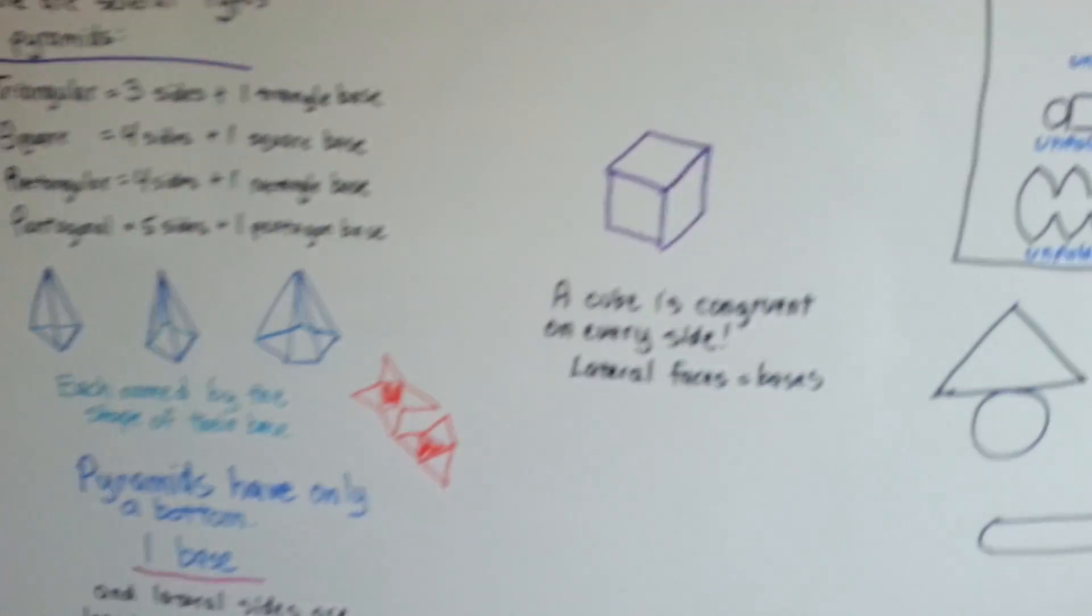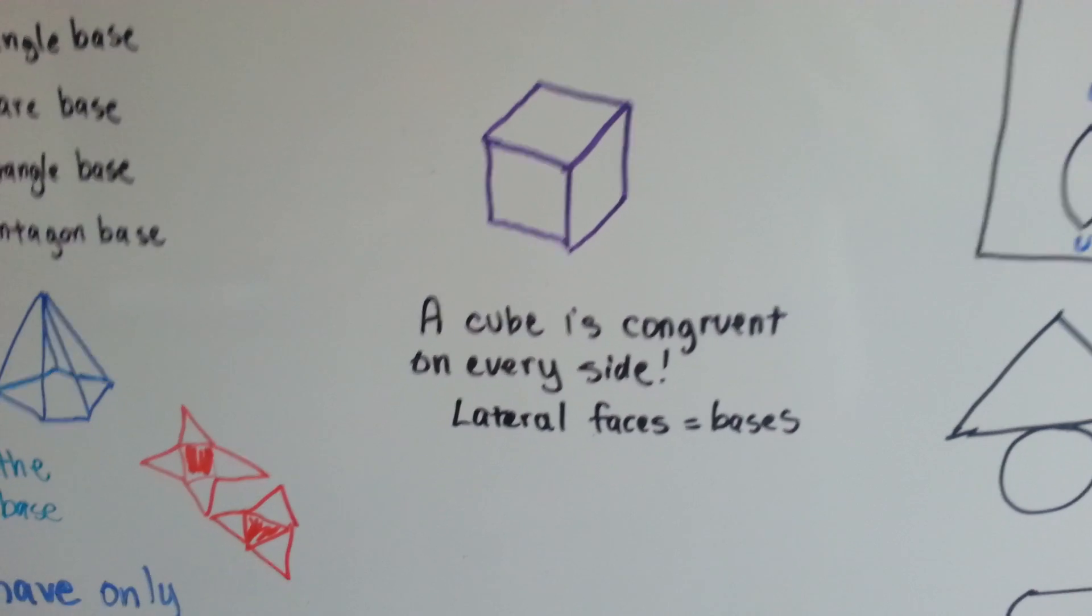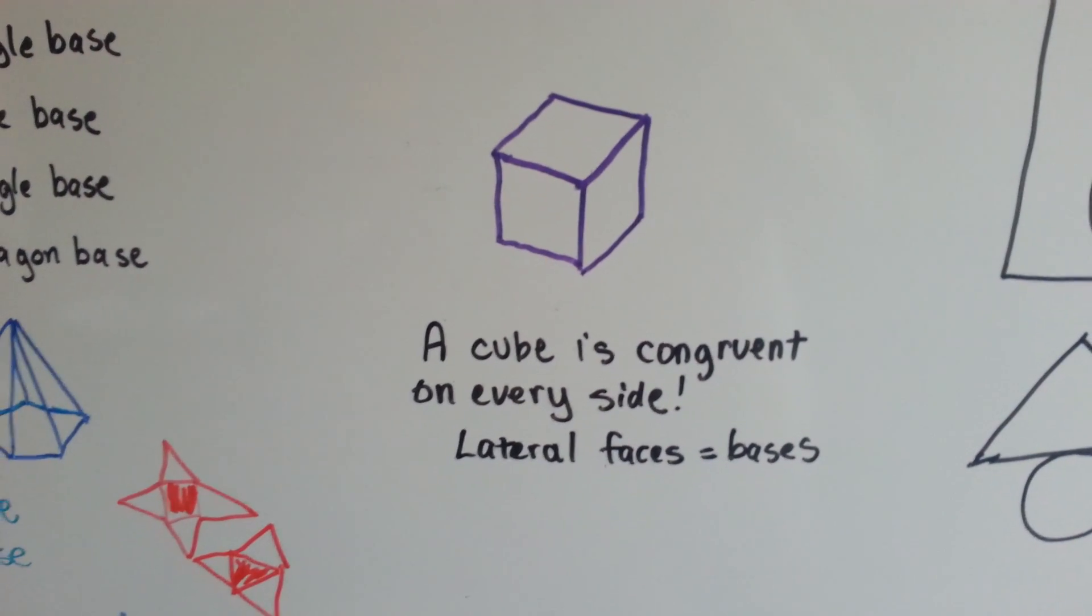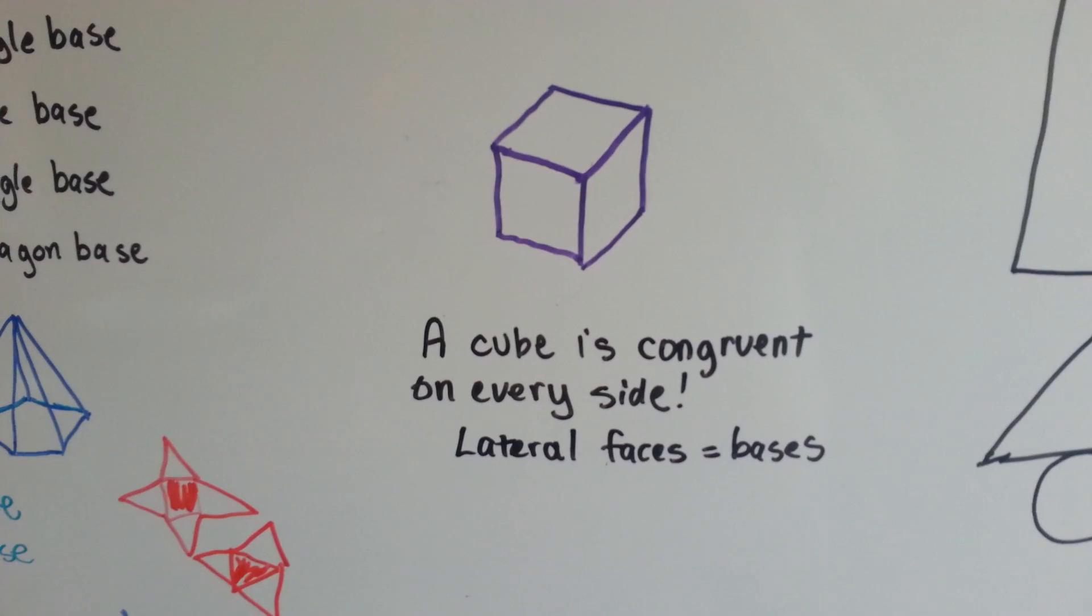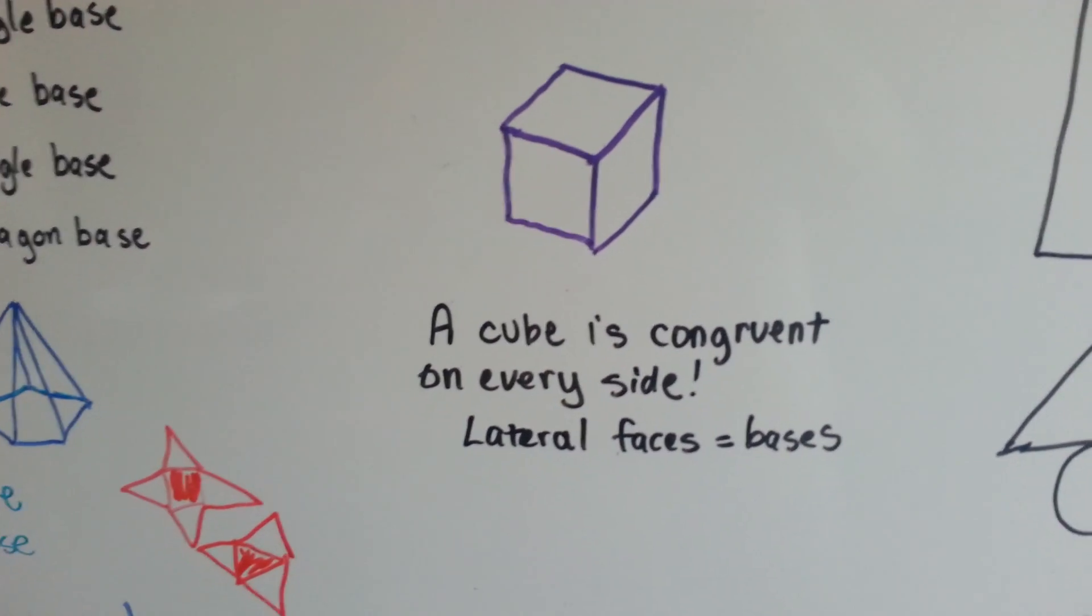There's only one shape that is congruent on every single side, and that's a cube. That would be a square prism. The lateral faces are equal to the bases. They're all the same size and shape.